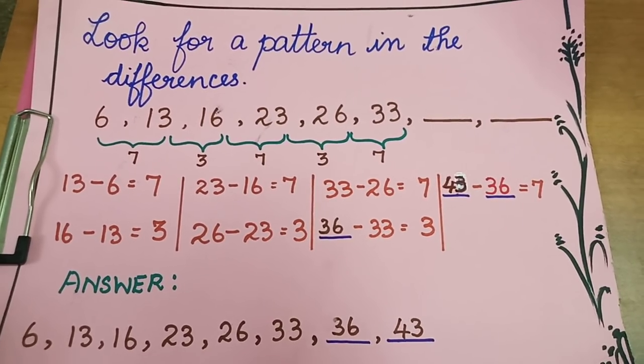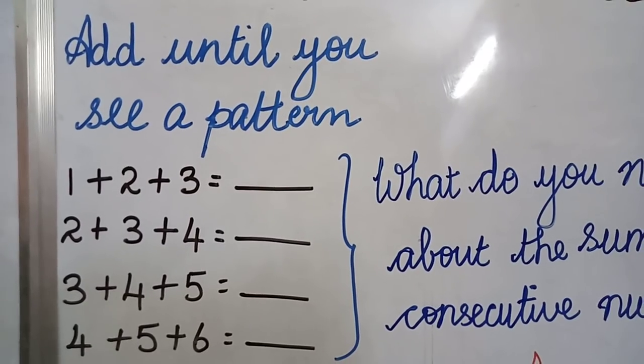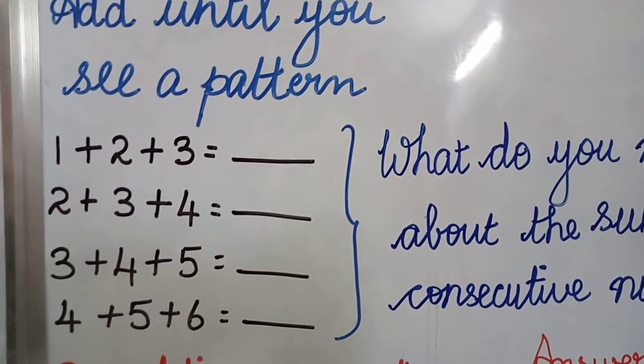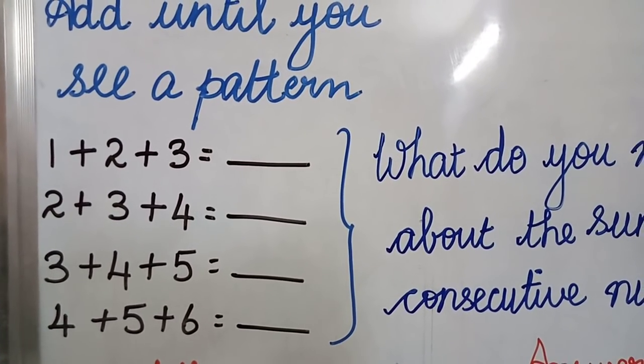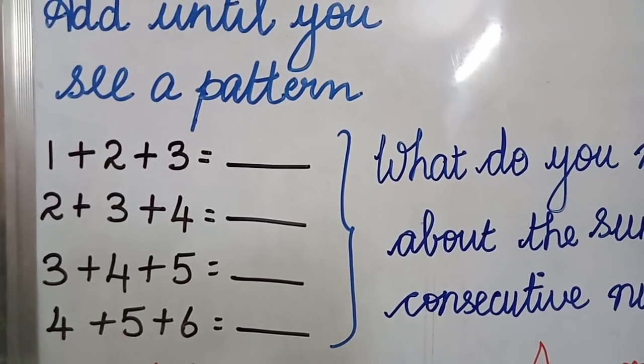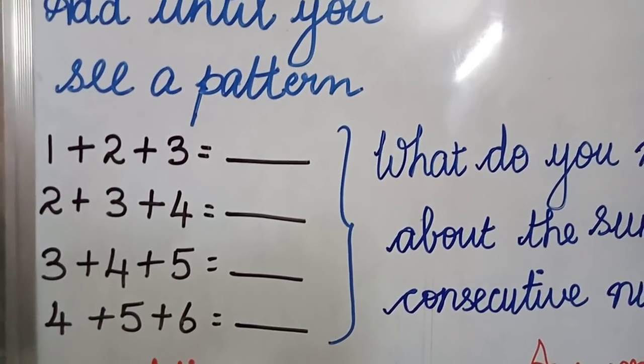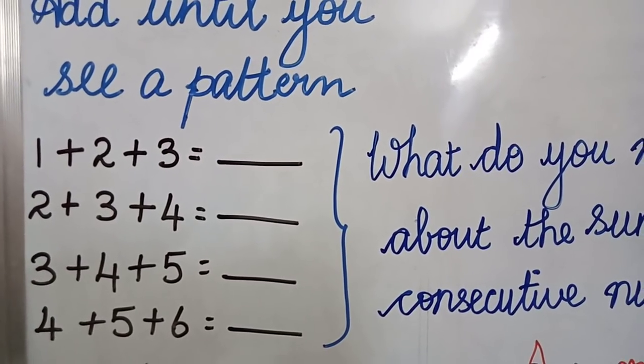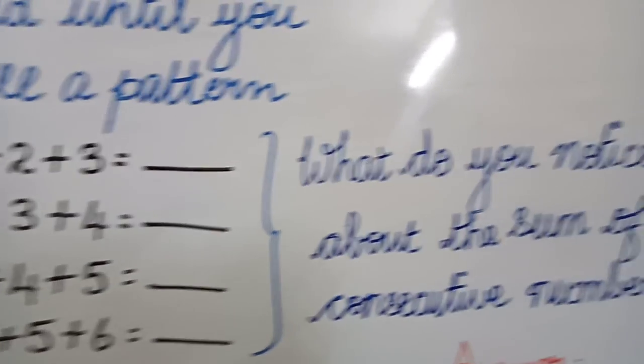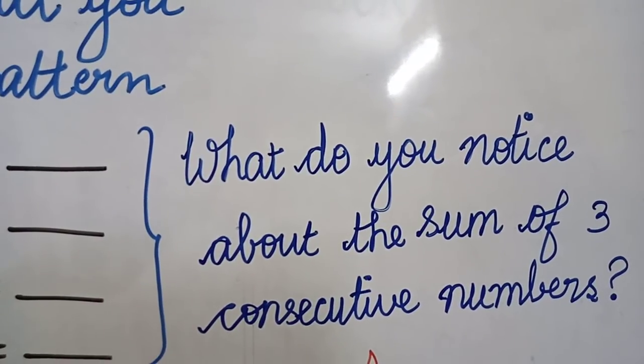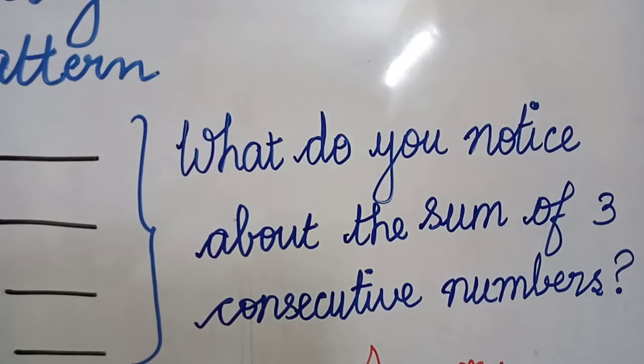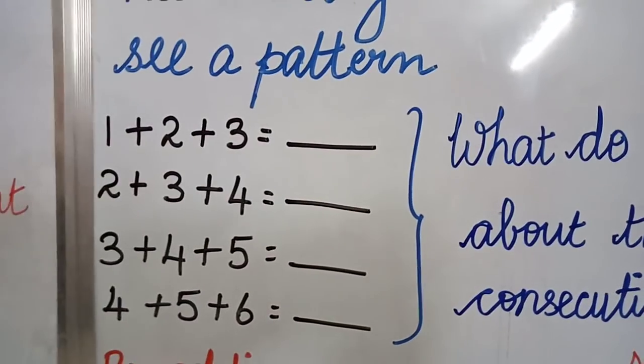Now let's move on to our next example: add until you see a pattern. And your question goes like this: 1 plus 2 plus 3 equals dash, 2 plus 3 plus 4 equals dash, 3 plus 4 plus 5 equals dash, and 4 plus 5 plus 6 equals dash. We need to find out what do you notice about the sum of 3 consecutive numbers.